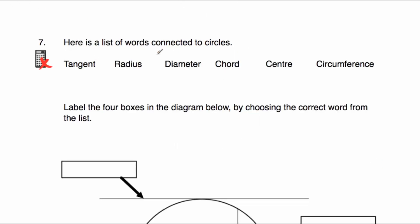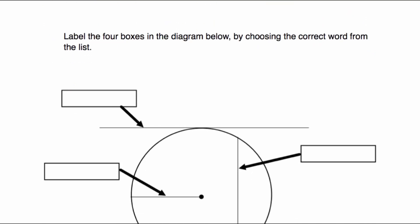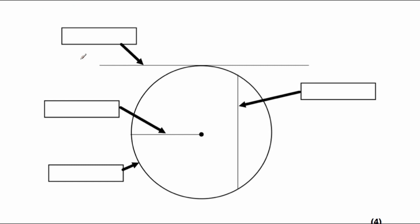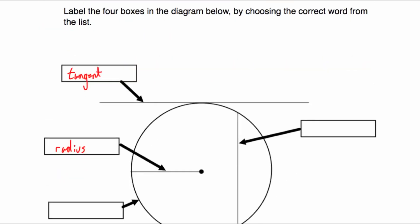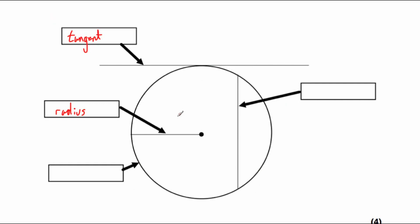We've been given words connected to circles — tangent, radius, diameter, chord, centre, and circumference — and asked to label four boxes in the diagram. The line that touches the circle once and carries on is the tangent. The line joining the centre of the circle to the circle is the radius. The label pointing to the circle itself is the circumference. And the line joining one part of the circle to another is the chord.